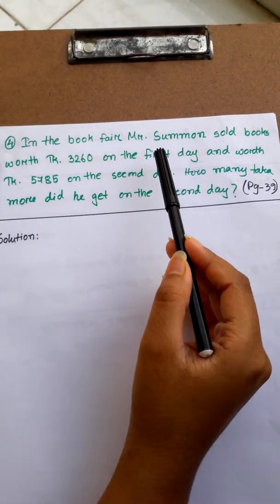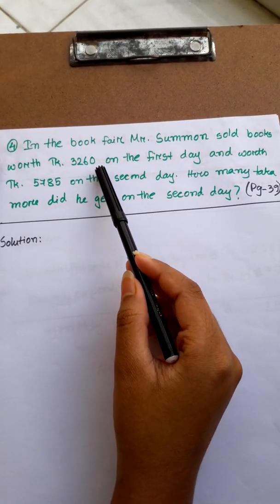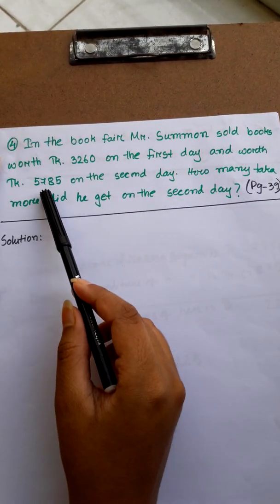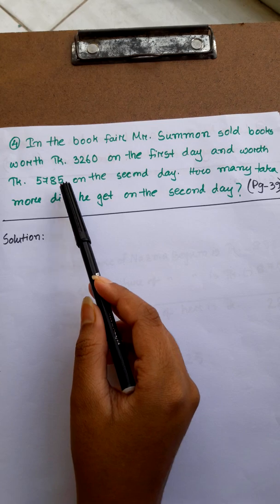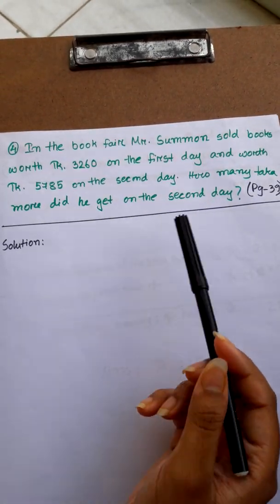In the book fair, Mr. Shumon sold books worth $3,260 on the first day and worth $5,785 on the second day. How many more did he get on the second day?